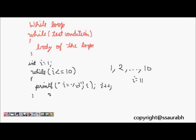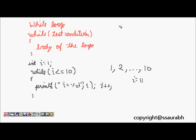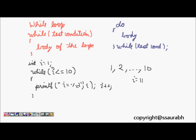Next is a small variant: the do-while loop. The syntax is do { body } while (test condition). One difference between while and do-while is that the body is executed at least once without first testing the condition. This way we at least get to execute the body once.